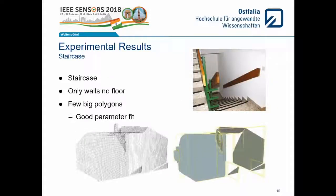We also conducted another experiment. Going down the hall, we arrive in a staircase. We placed the sensor on the front of the first step. As you can see, here is the raw data, and here are the generated polygons from our algorithm. The method finds the large polygons, the opposing plane, and on the right side it can even differentiate between the handrail and the wall. Here we matched the controlling parameters quite well.